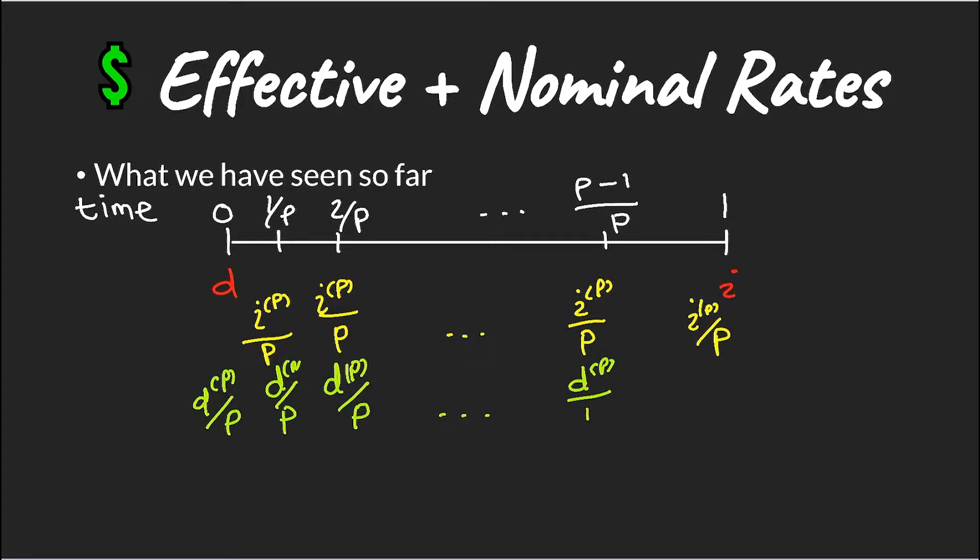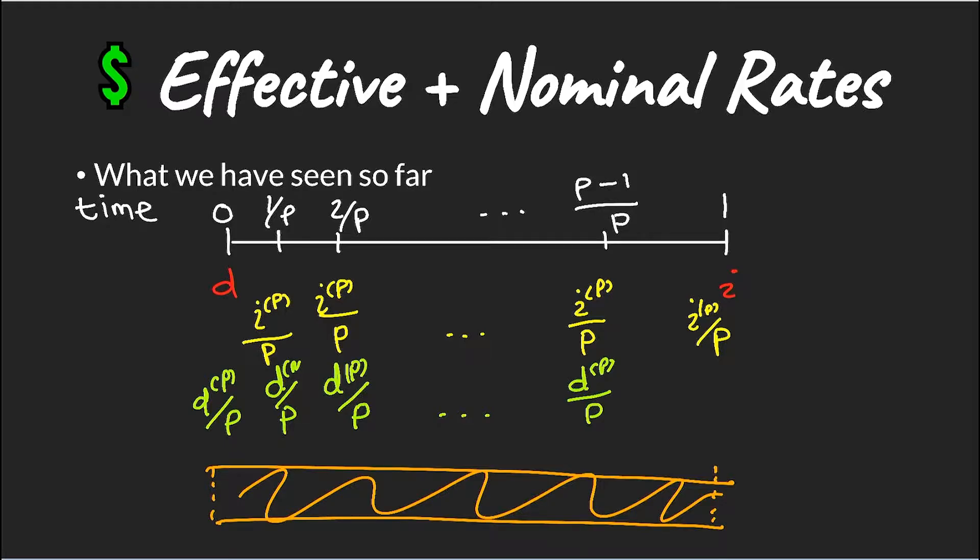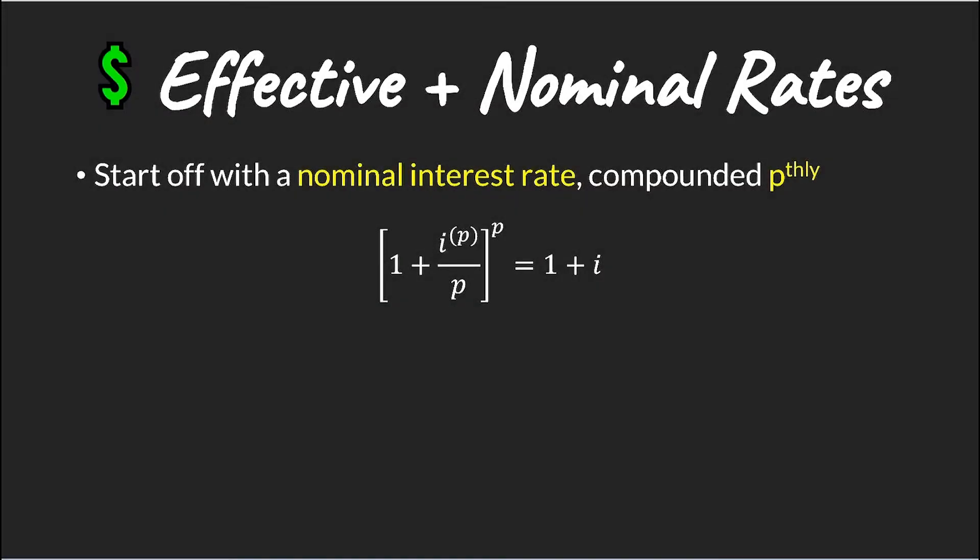Now, with the continuously compounded interest rate, or with the force of interest, we have interest that is paid every moment of our time period. So to explore this, we start off with a nominal rate compounded P-thly. And what we really want to do is, we want to take our time period and break it up into tiny pieces.